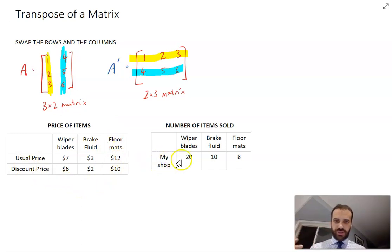This is my shop and I sell 20 wiper blades, 10 brake fluid, 8 floor mats. And these are the prices. These are my usual prices for those items. These are my discount prices for those items.